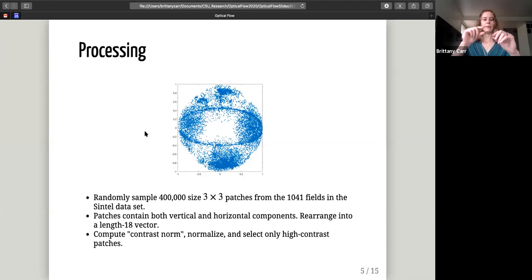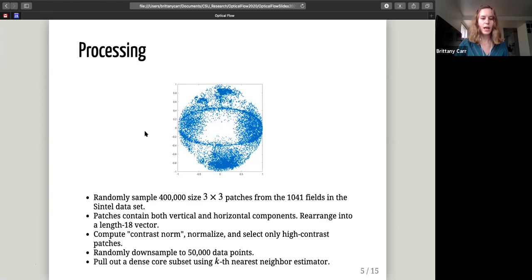From there, we want to focus specifically on high contrast patches. So we're going to have to compute the contrast norm and normalize a little bit. To give you an idea of what I mean by contrast norm, you could picture something with low contrast norm being a patch where all of the vectors are pointed in the same direction and they're very short. So nothing's moving fast and it's all kind of moving the same direction. Whereas a high contrast patch would have something like maybe a drastic movement down and then another movement to the right, which would give us a lot more information about the optical flow at that specific patch. For computational feasibility, we then want to randomly down sample to 50,000 data points, just so we don't go too crazy. And last but not least, we want to pull out a dense core subset using the kth nearest neighbor estimator. To describe this process, think about if we were trying to sample the population of any country. All of the places that have really high density of people, if we were to randomly select people, we'd probably get a very dense subset here and here maybe. And then maybe if it was in America, in Wyoming, we'd only have one or two people just because the population density is so much lower. We want to focus specifically on the dense subsets. So I might eliminate outliers like, sorry, the people in Wyoming.